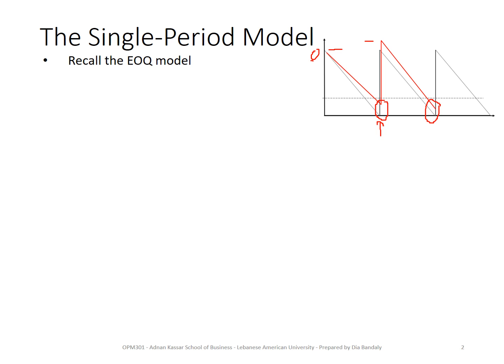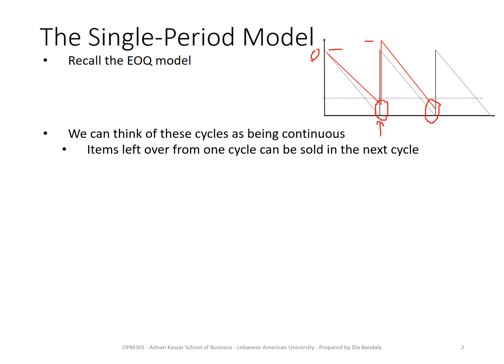We can revise our knowledge of demand if we see that demand is changing. These cycles make it easy for us to tackle these changes, because whatever could not be sold in one cycle, we can sell in the second cycle. However, this condition is not applicable for all products. We have many products where this applies, but for some products — which we call perishable — this is not applicable.